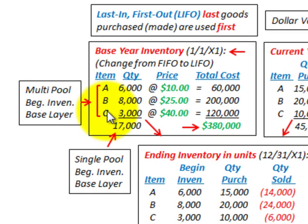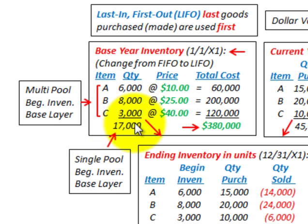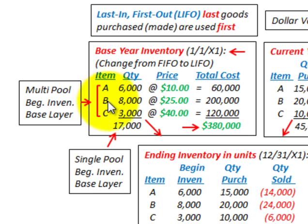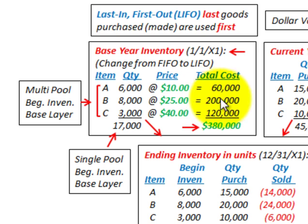The basic difference when talking about the single pool beginning inventory is that we're going to have some base layer, and we look at these different items or product classes as one aggregate total amount. But when we're working with multiple inventory pools, we look at each one of these product lines or product classes as separate units. For our base year inventory, we have some beginning quantity at a specified beginning price, and we calculate quantity times price for each product line.